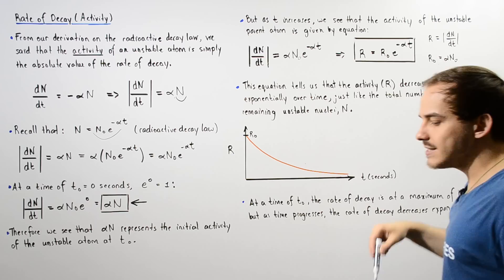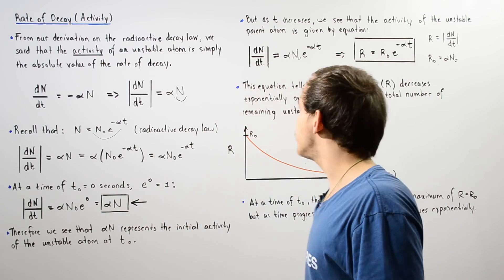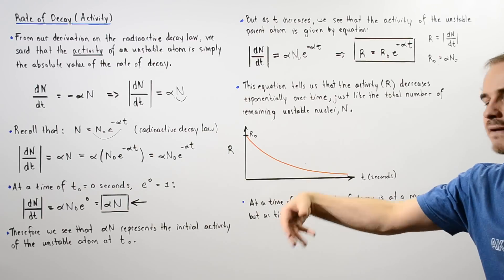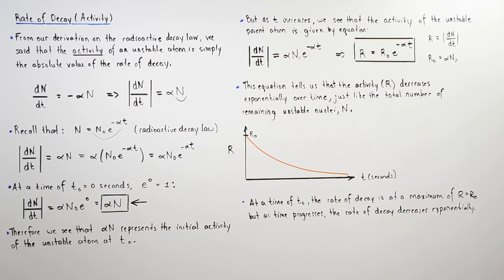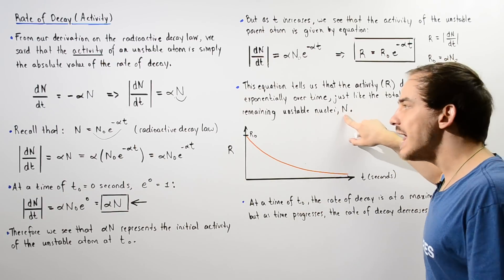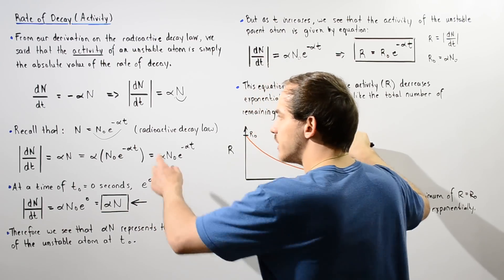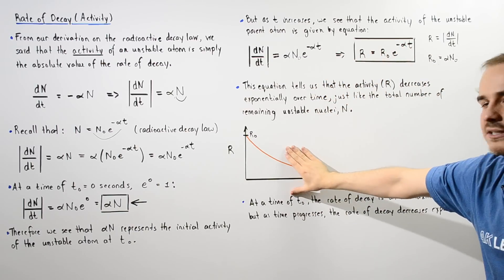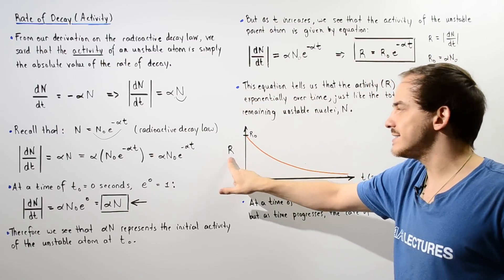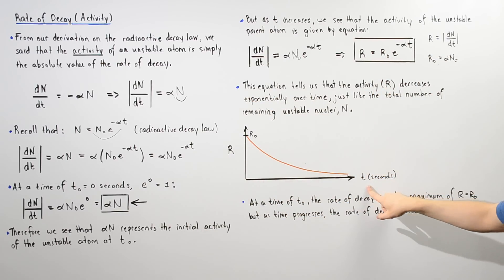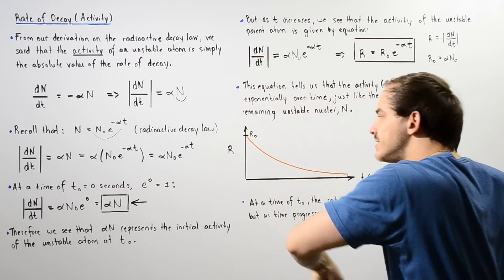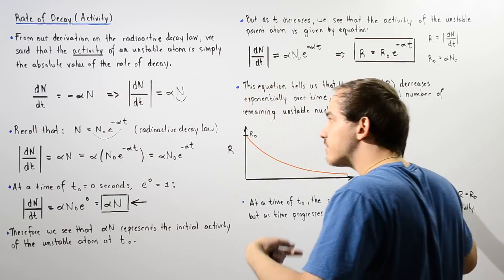So r is the activity and r-naught is the initial activity at a time of zero. This equation tells us that the activity r decreases exponentially over time, just like the total number of remaining unstable nuclei n also decreases exponentially. We can graph this equation with the y-axis as r (the activity) and the x-axis as time, and as we increase the time, we see that the activity decreases exponentially — the rate of decay drops exponentially.